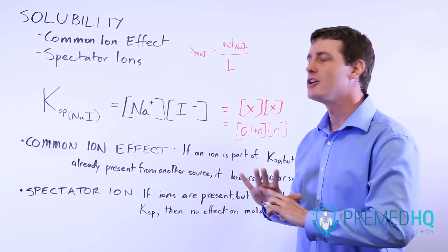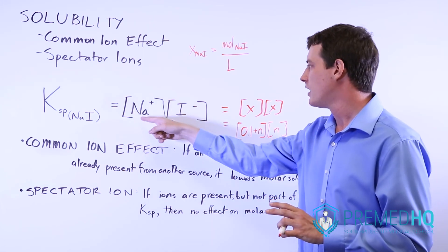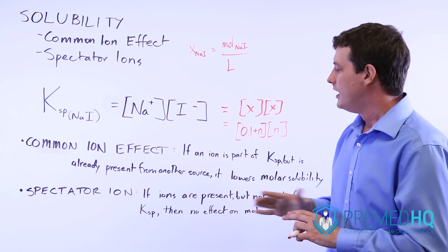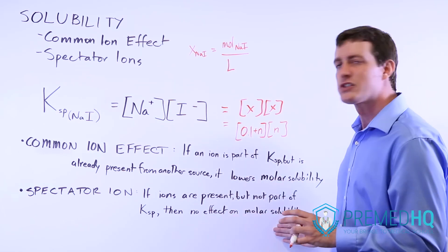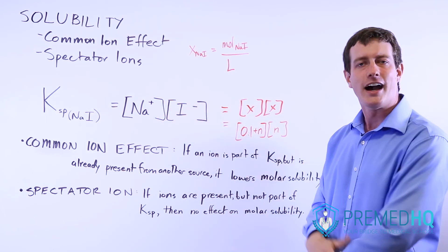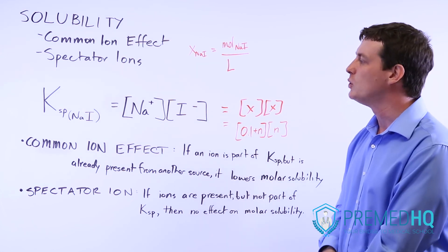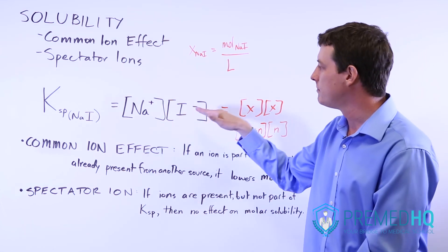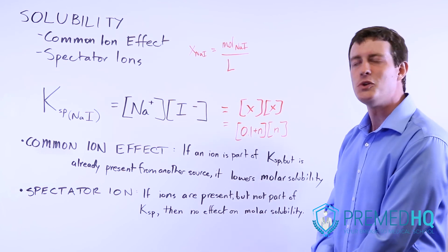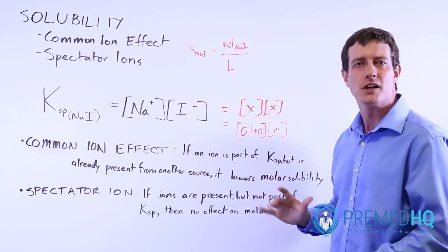If there are ions present, but they're not part of KSP, so they're not Na and they're not I, then those are going to have no effect on the molar solubility of NaI after that because the KSP value only cares about the sodium and the iodine ions. They do not care about any other ions that may be present.